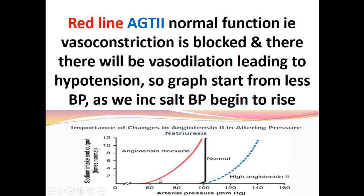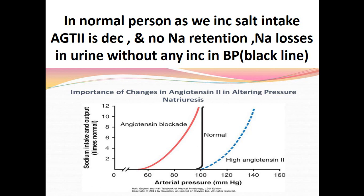The black line represents the normal person. In normal persons with angiotensin 2 present, if you increase salt intake, angiotensin 2 level decreases immediately. When angiotensin 2 is reduced, excess sodium is lost in the urine with no sodium retention, and blood pressure remains normal. This maintenance of blood pressure within normal limits is due to the decrease in angiotensin 2 level in the body.